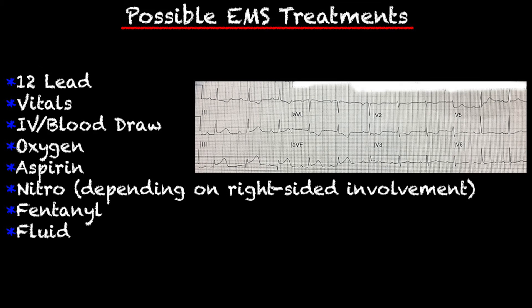Also fentanyl as an analgesic and fluid resuscitation. All those treatments are very similar to how you would treat a patient complaining of chest pain of cardiac origin. But what's really going to separate this is what you relay to the hospital — let them know where you're seeing elevation, where you're seeing reciprocal depression, what you've done to treat the patient, and how far out you are. We also need to not forget to treat our patient. If they're complaining of nausea, it may be time to give whatever anti-emetic you carry. You don't want to get so caught up on what you see on the monitor and forget to actually treat your patient and their complaint.